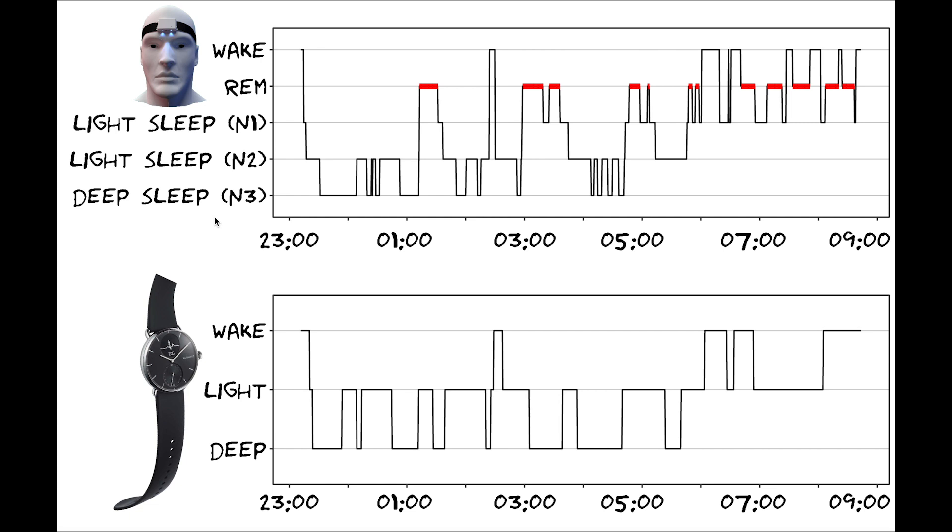Now the Withings device only predicts wake, light and deep sleep so those are the ones I plotted here. The scientific EEG device predicts more sleep stages so we have wake, REM, light sleep and deep sleep, and light sleep is actually divided into two sub parts so N1 and N2 light sleep. To put it really simply we can say that the N1 sleep is slightly lighter light sleep and N2 is slightly deeper light sleep.